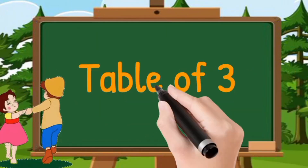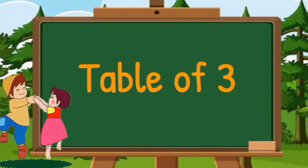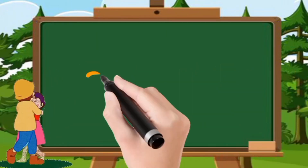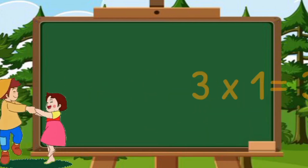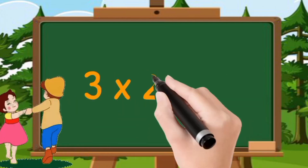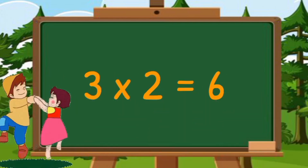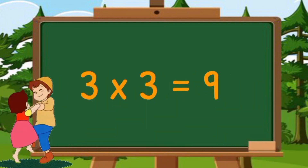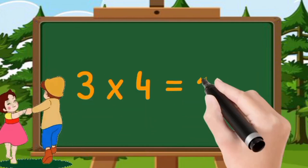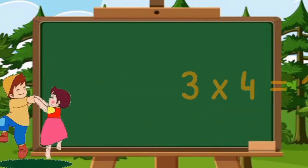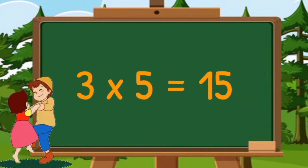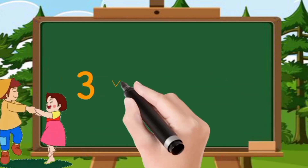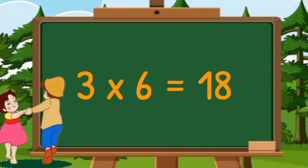Table of three. Three ones are three. Three twos are six. Three threes are nine. Three fours are twelve. Three fives are fifteen. Three sixes are eighteen.